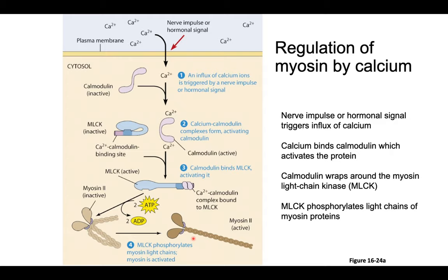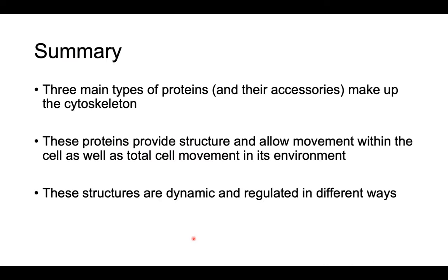Muscle movement was a very specific case of motility with actin molecules, and that wraps up our discussion of the cytoskeleton. To summarize: there are three main kinds of filaments — microtubules, intermediate filaments, and microfilaments or actin filaments. Together they make up the cytoskeleton, which provides structure and allows movement not only within the cell but also movement of the cell as a whole. These aren't made and then left — these structures are all dynamic, changing all the time and regulated in different ways to help with their function. It's really helpful to understand how the cell is given structure and what that means for cell movement, so we can start filling in what's not drawn in those diagrams.